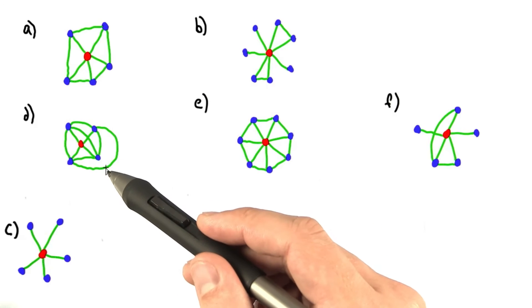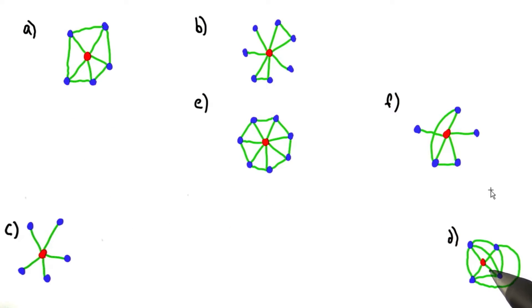You can see that D is a clique, which has a clustering coefficient of 1, and so that will be the highest clustering coefficient.